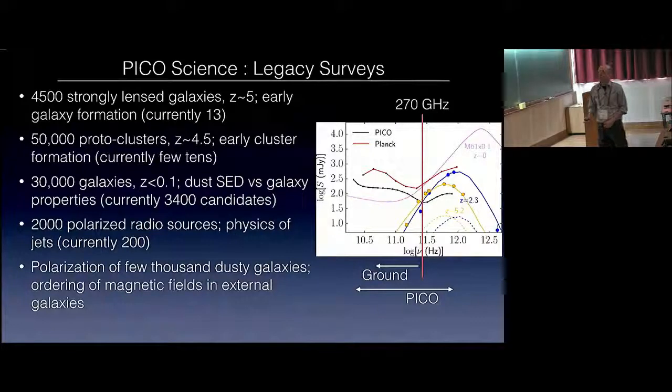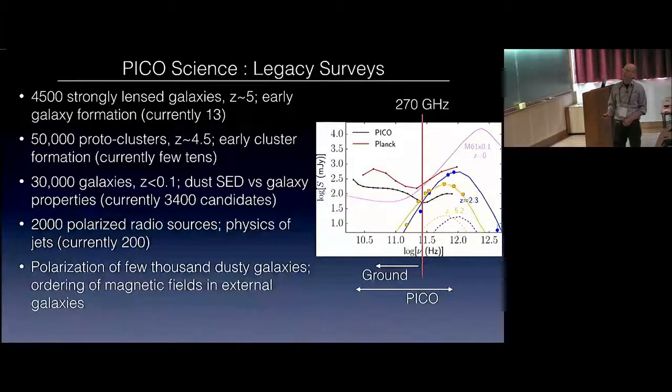Here are some of the legacy surveys. Forty-five hundred strongly lensed galaxies up to z equal 5. This will give early galaxy formation. Here we show the flux limit versus frequency. The red line is where the ground can make measurements. This is Pico from the black all the way to here. You can see that this matches the peak of the lensed spectrum. So these are two galaxies at z equals 5.2 and z equals 2.3. These are actual detections of lensed galaxies. You can see that they're boosted. And this will be detected with high signal by Pico. Forty-five hundred of them. Currently there are 13 known.